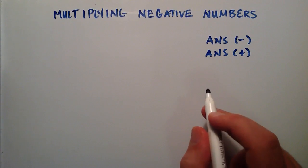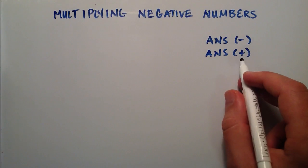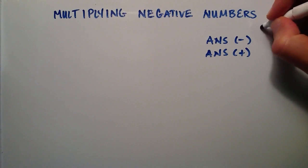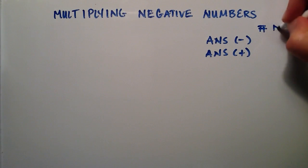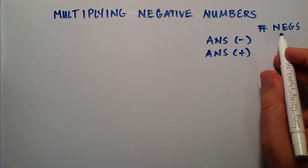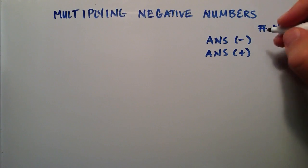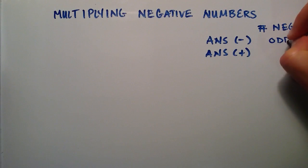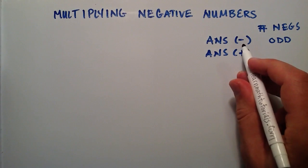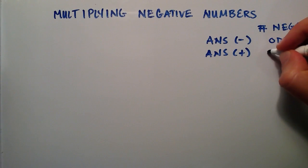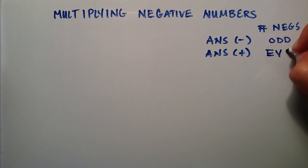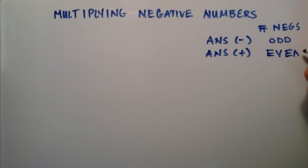The way that we determine whether our answer is negative or positive is we count the number of negatives that we're multiplying together. So I'm just going to write number of negatives here. If the number of negatives we're multiplying together is odd, then our answer will be negative. If the number of negatives is even, then our answer will be positive.